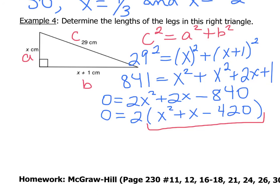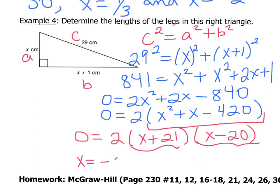So now when we factor that, we end up with x plus 21, and x minus 20. And so you want to set each bracket equal to zero. And our result ends up with x equals negative 21, or x equals 20.